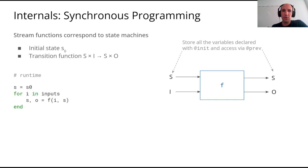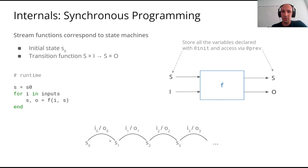Let's look at the internals of the library. In synchronous programming, stream functions correspond to state machines, very similar to iterators in Julia, where you have an initial state s0 and a transition function taking both a state and input and producing a new state and output. The init and prev values are hidden in the state; the input is either the location of a particle or the observation, and the output is the posterior distribution. Starting from state s0, receiving input y0 produces output o0, putting you in state s1, and so on.